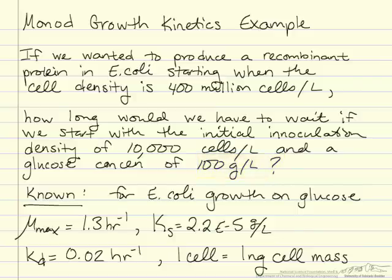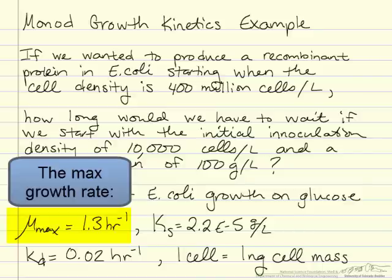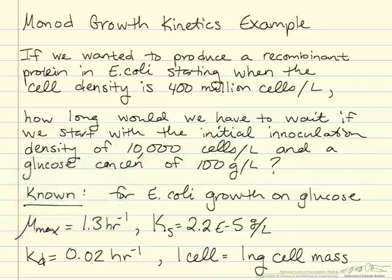We know that for E. coli growth on glucose, mu max is 1.3 inverse hours, Ks constant is 2.2 times 10 to the negative 5 grams per liter, the death constant is 0.02 inverse hours, and we're going to assume that one cell is approximately 1 nanogram of cellular mass.